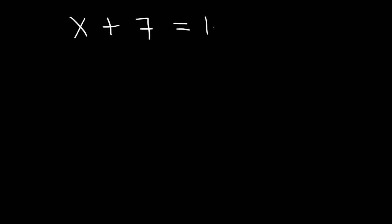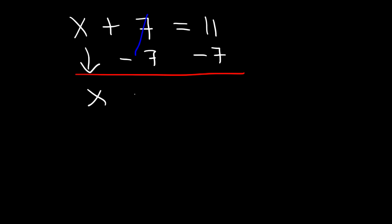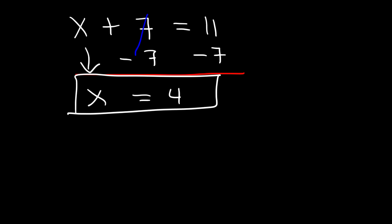So based on that example, go ahead and solve this equation. If x plus 7 is equal to 11, what is the value of x? Let's subtract both sides by 7. 7 minus 7 is 0, and all we have left is x, which is equal to 11 minus 7. That's 4. And we could verify it: 4 plus 7 is 11.